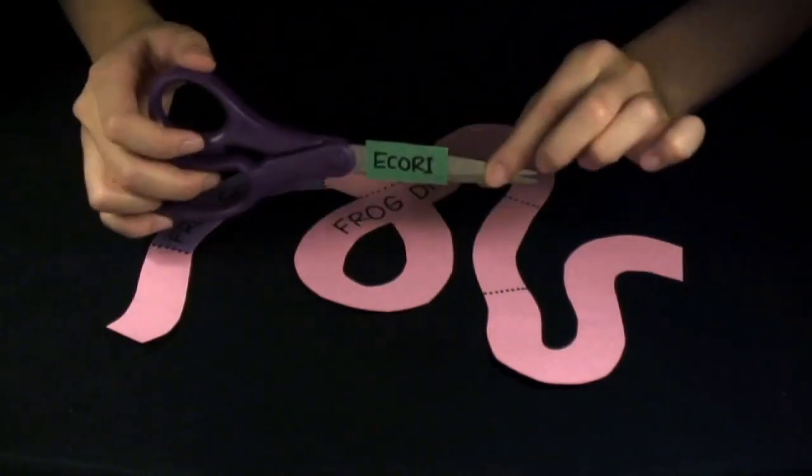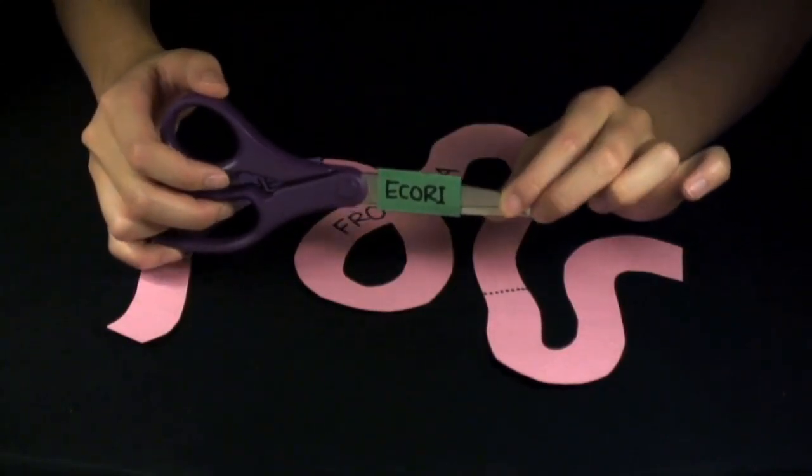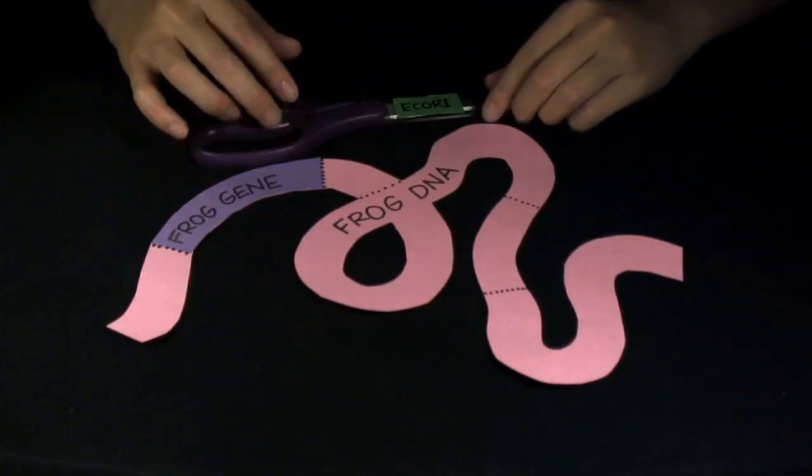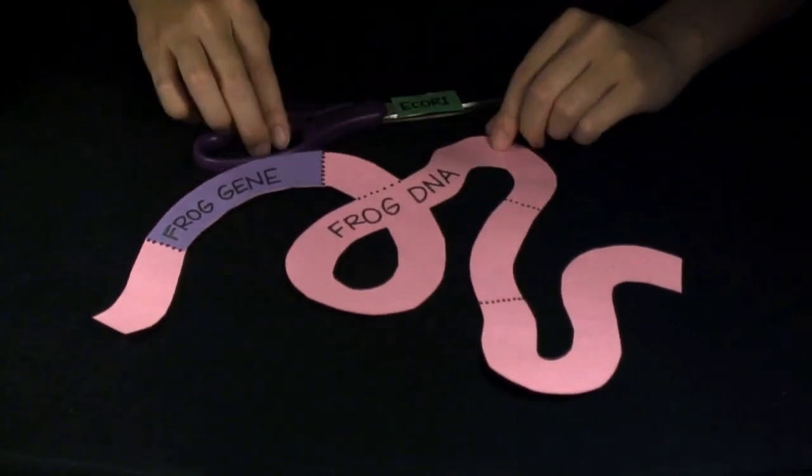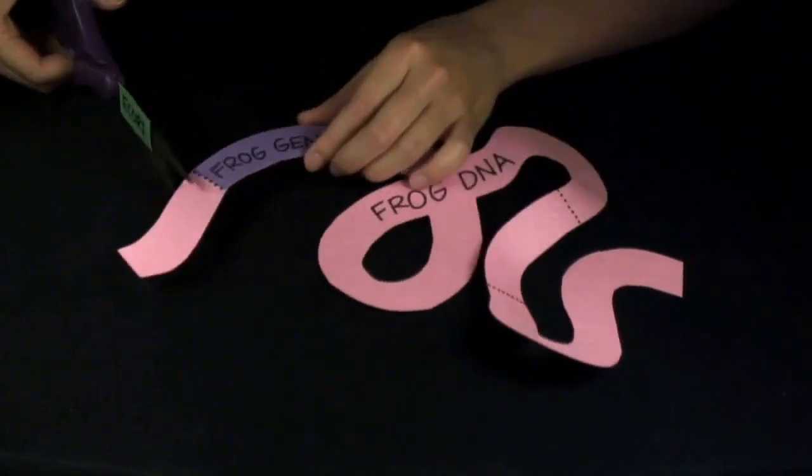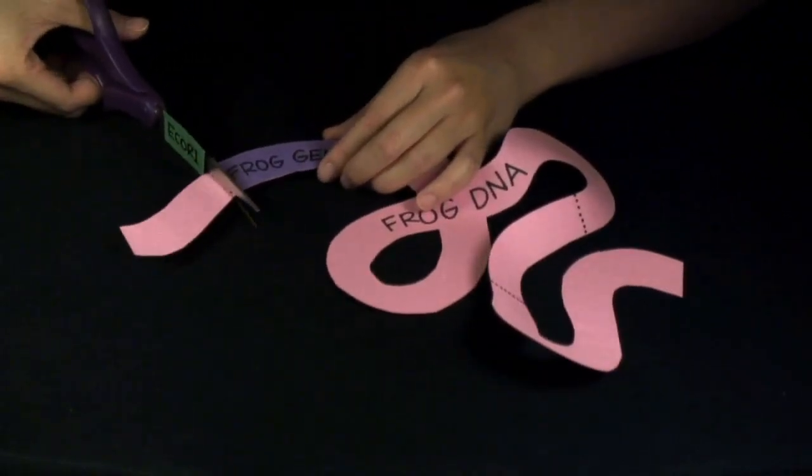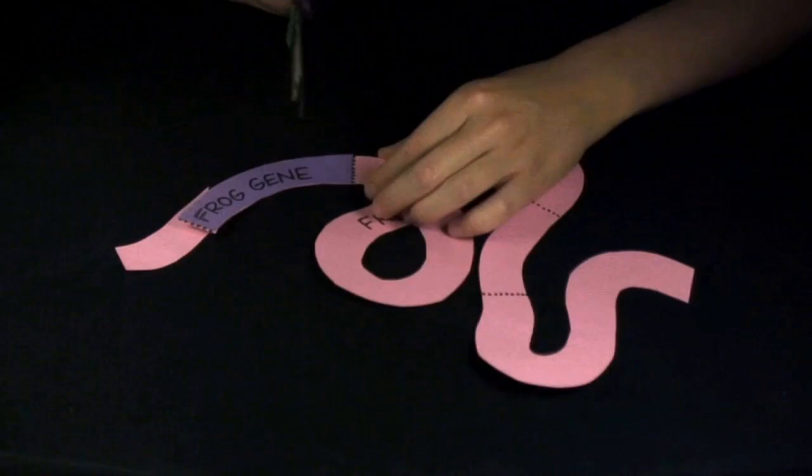Now, there are tons of different kinds of restriction enzymes and they all cut in different places in DNA. Our enzyme that we're using today is called EcoR1. Now, this piece of DNA has more than one spot that EcoR1 can cut as shown by the dotted lines. So, we're going to end up with other pieces of DNA in addition to the one we actually want. That's actually okay because we're going to deal with that problem later.